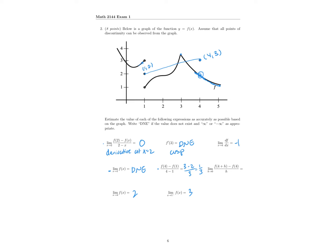Finally, the limit as h is approaching 0 of f of 4 plus h minus f of 4 over h — this is just the limit definition of the derivative. But because we have that open hole there, there is a removable discontinuity, so we can't actually evaluate this limit. That limit is not going to exist because of that discontinuity.